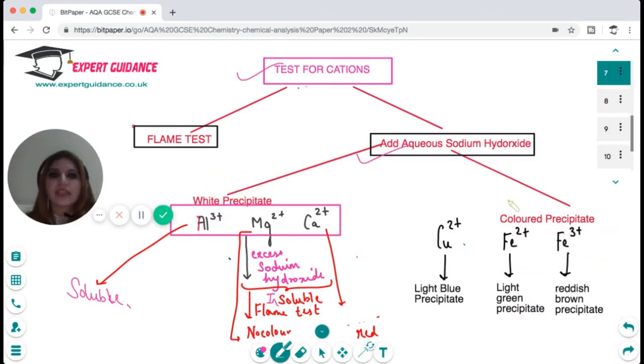You should remember these ions and their colors when you add sodium hydroxide. If there's a colored precipitate, light blue is the precipitate for Cu2+, light green is for iron 2+, and reddish brown is for iron 3+. When it is a white precipitate, it is for aluminium, magnesium, and calcium.